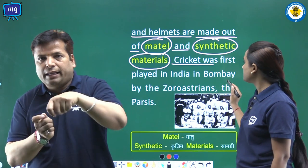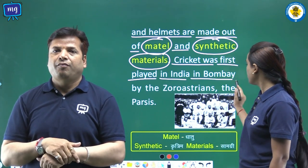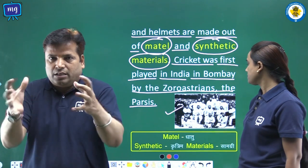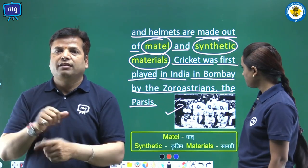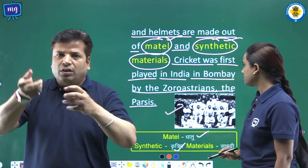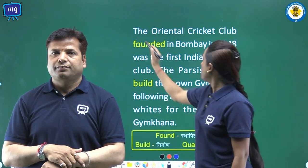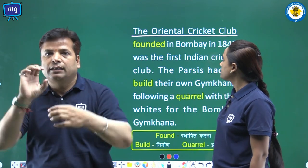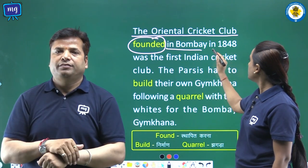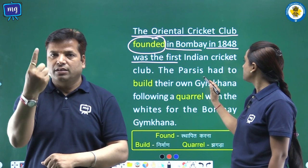Cricket was first played in India in Bombay by the Zoroastrians, the Parsis. The Oriental Cricket Club, founded in Bombay in 1848, was the first Indian cricket club. Word meanings: metal — dhatu; synthetic — kratrim; materials — samagri; found — sthapit karna.